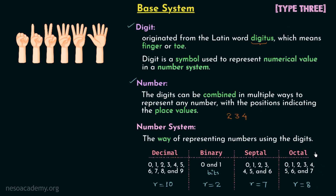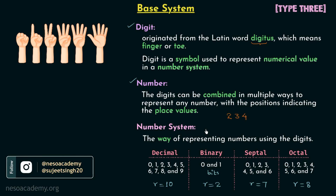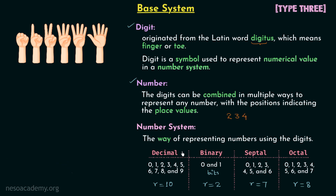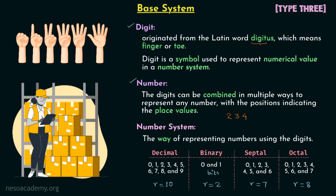Number systems are needed because they provide a standard way to represent numbers and allow us to communicate numerical values with one another. Using them, we can perform calculations, do measurements, and store information in a structured way. Different number systems are used in different applications. For example, binary is used in digital electronics and computer science, while decimal is used in day-to-day life for arithmetic operations, counting, finance, science, and education.